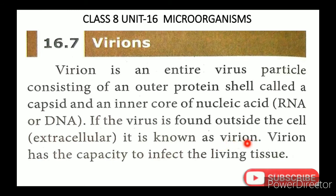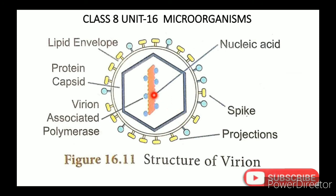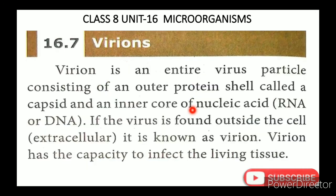This is the Virion. A virion has the capacity to infect living tissue — that is, the body of the living organism. This is the structure of the Nucleic Acid. This is the Spike. This is the Protein Capsid. The lipid envelope is fat. These are the Virions.